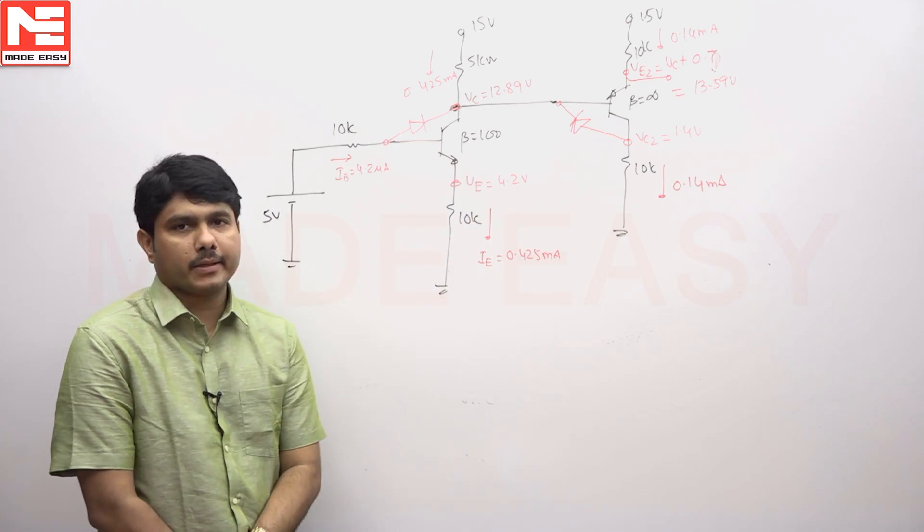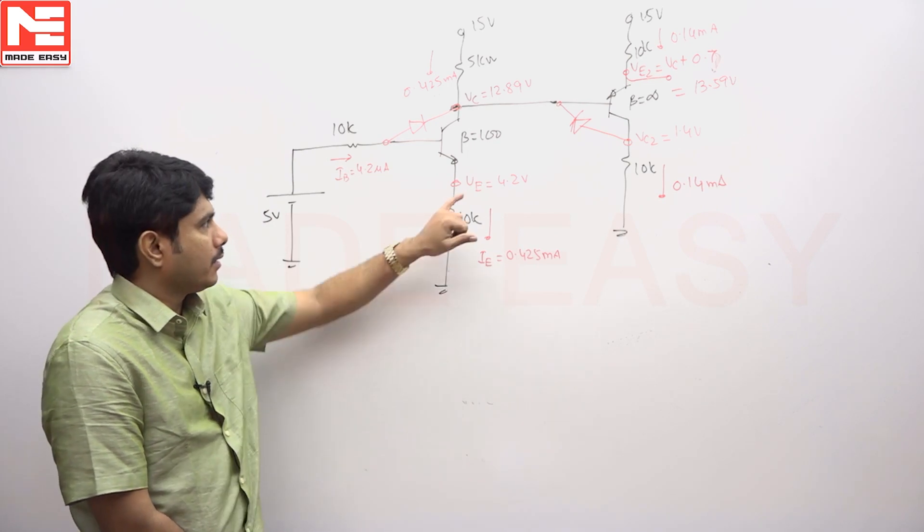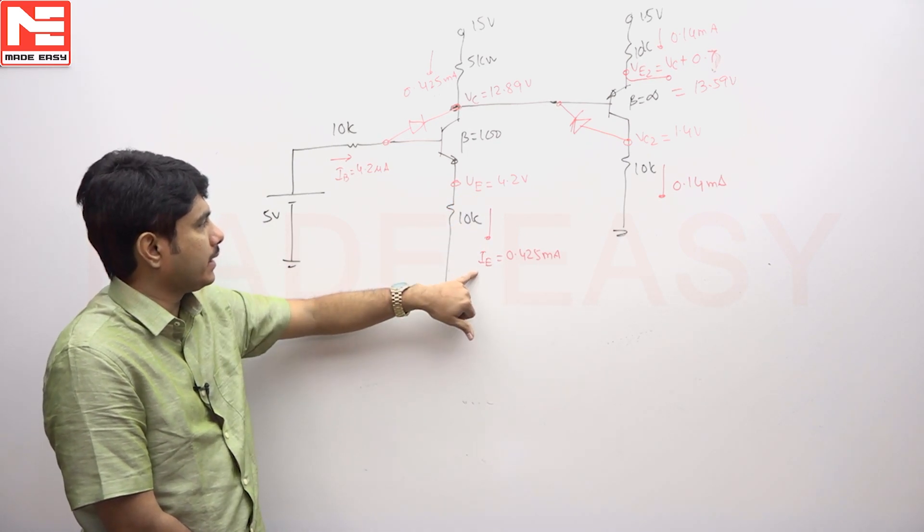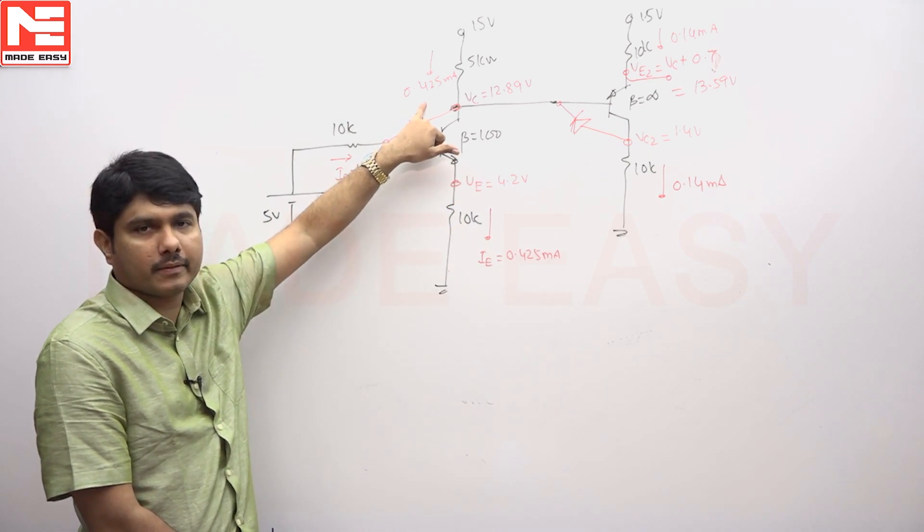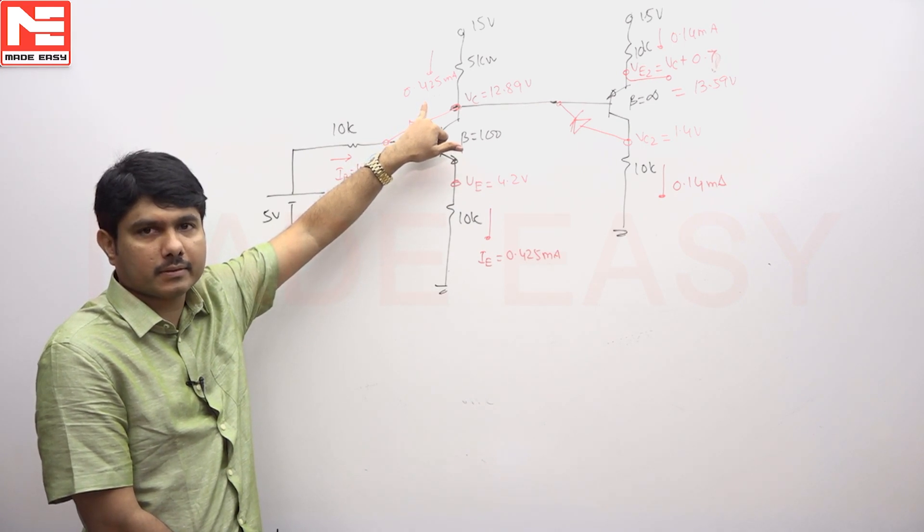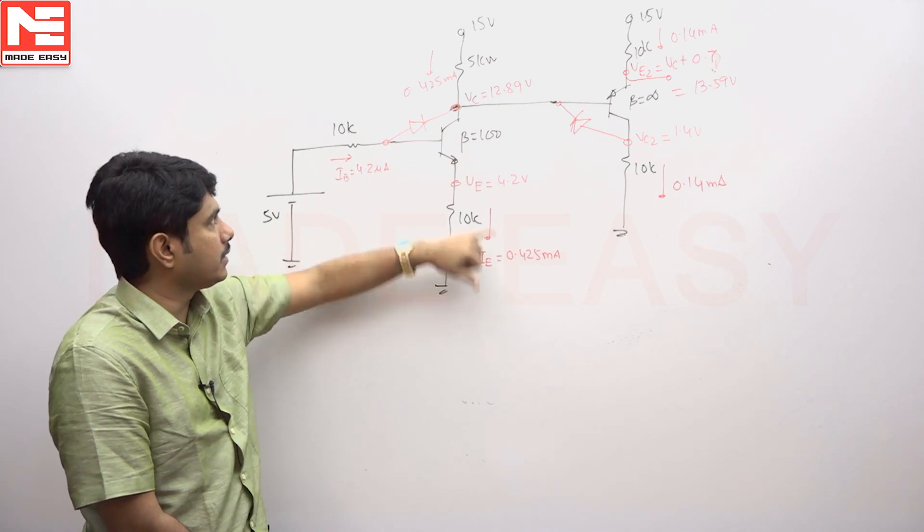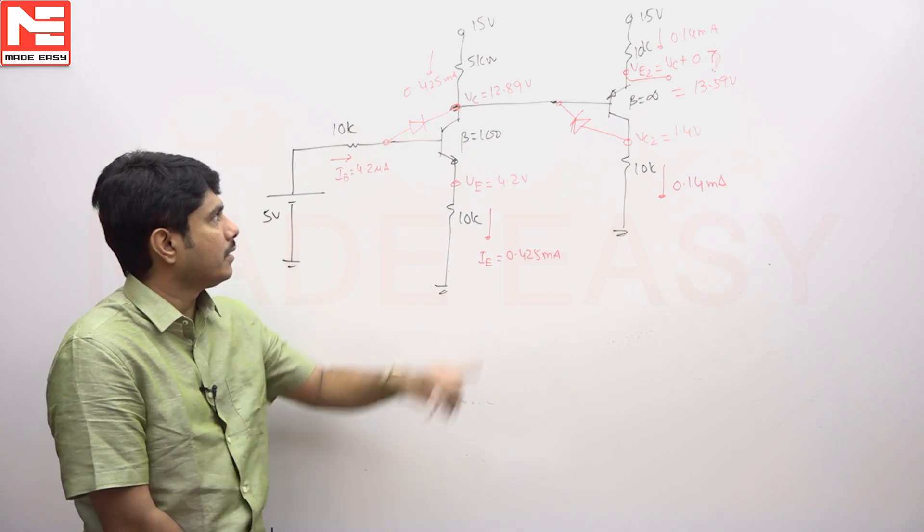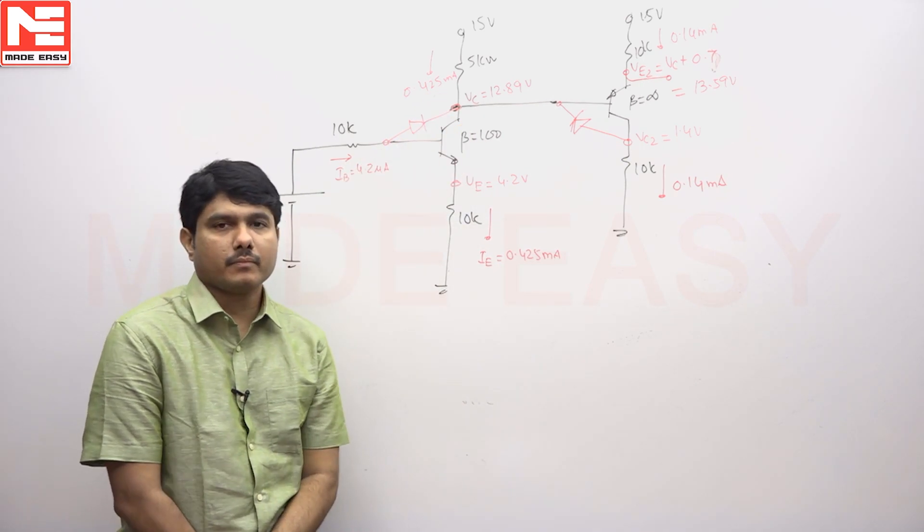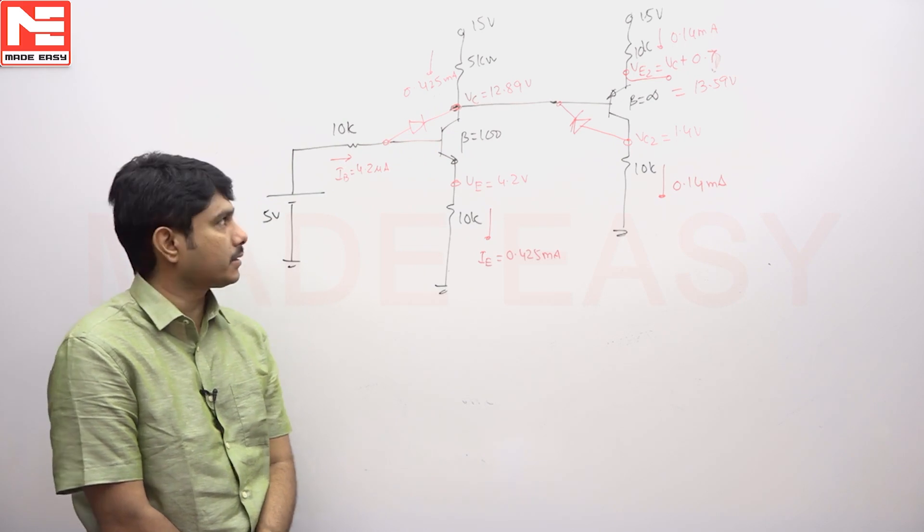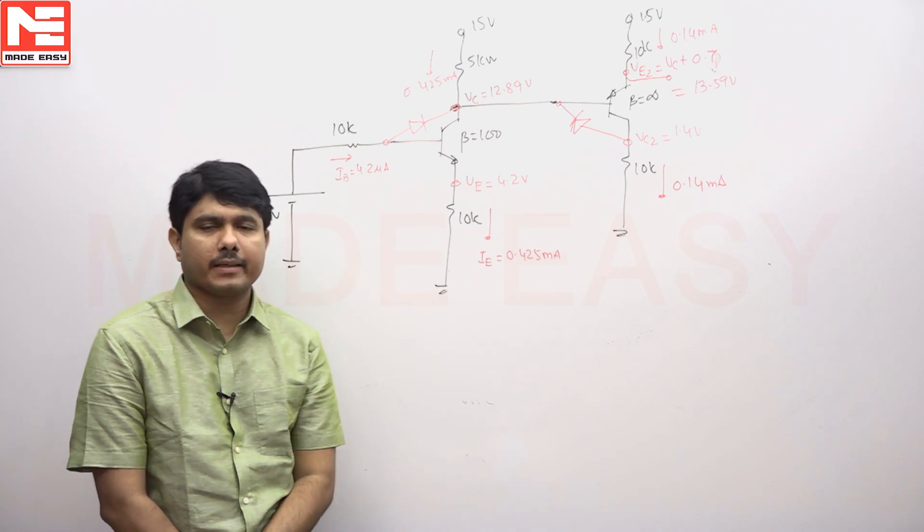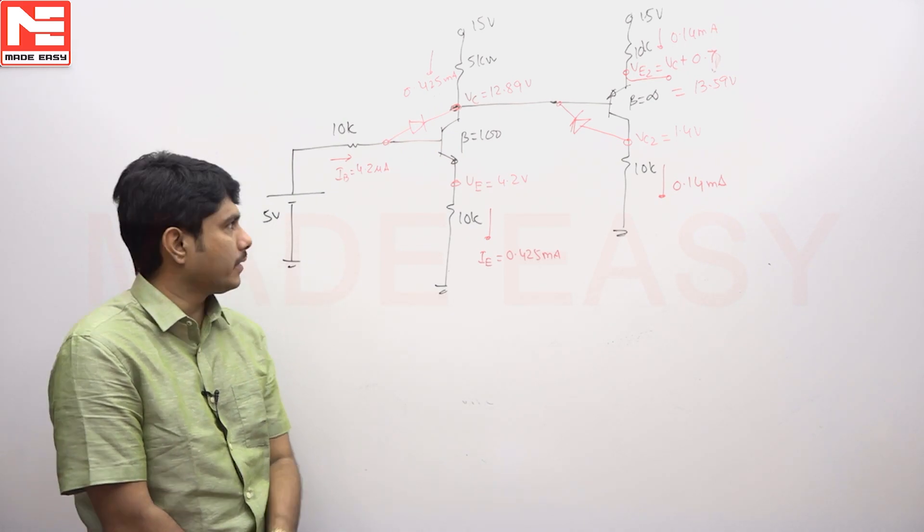Emitter voltage is coming around 4.2 volts. Taking IE equal to IC approximation, because I do not know whether it is active or saturation. Assuming that it is active, IE equals IC, we get VC drop there: VCC minus IC into RC. It is coming to 12.89 volts.